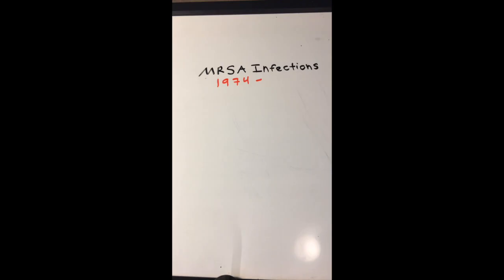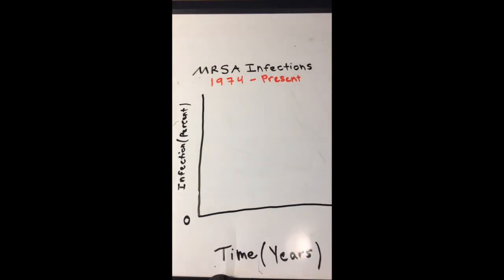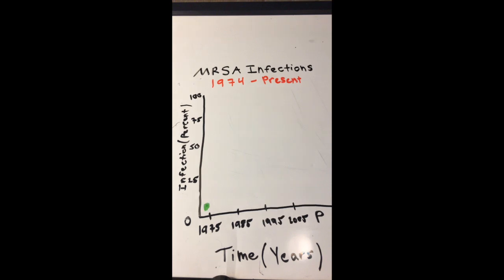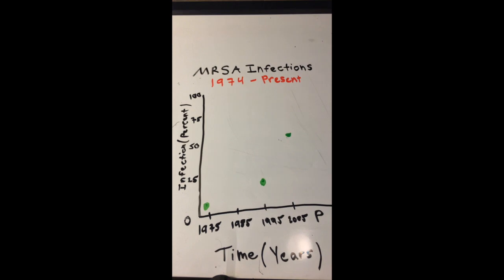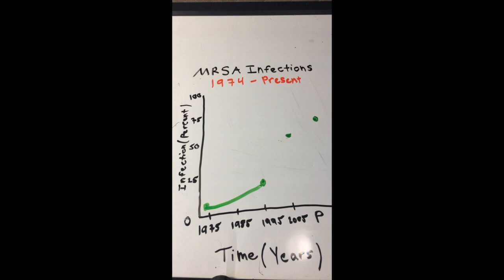MRSA infections have steadily increased over the years. In 1974, 2% of all Staphylococcus aureus infections were MRSA, which rose to 22% by 1995, 64% by 2004, and an estimated over 70% of all Staphylococcus aureus in present day is now MRSA.